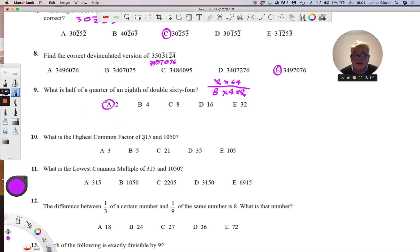Highest common factor of 315 and 1050. So we look for factors. You can see that 5 can divide into both of these numbers, so we will divide by 5.